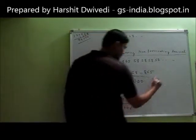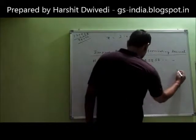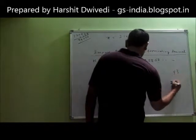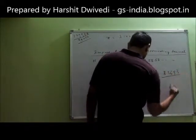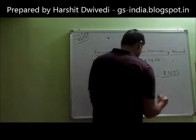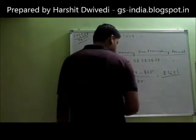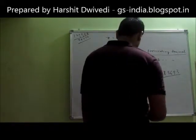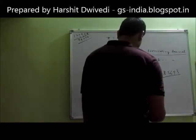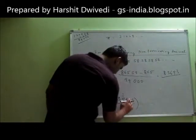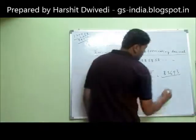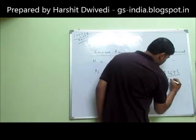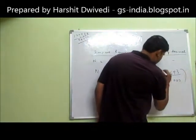If you solve this it will come out something like: numerator is 86558 minus 865 equals 85693. Denominator is 99000. So n equals 85693 upon 99000. This is the way to approach these things.